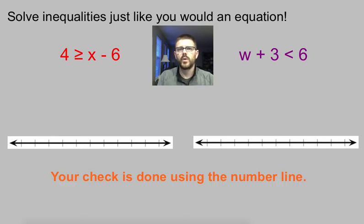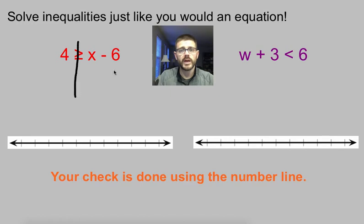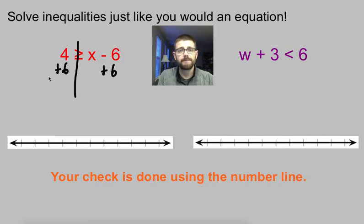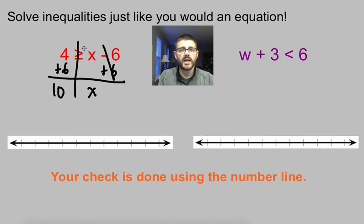We're going to solve each of these just like we would an equation. For instance: 4 is greater than or equal to x minus 6. We draw our line down through our inequality and focus on our variable. They subtracted 6, so I'm going to add 6. Subtracting 6 and adding 6 become 0, so it drops out, leaving x. 4 plus 6 is 10. Our inequality symbol just slides down — it's still greater than or equal to 10.